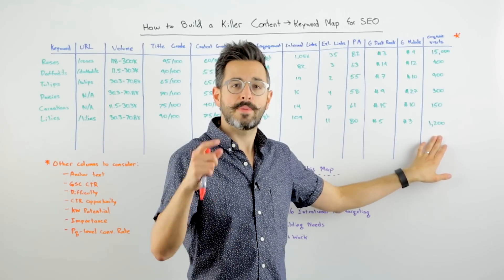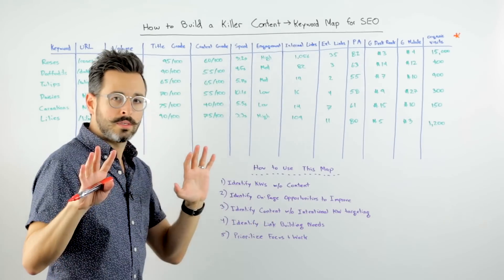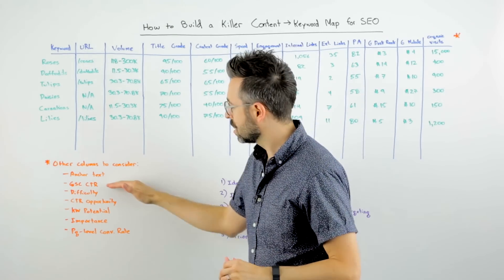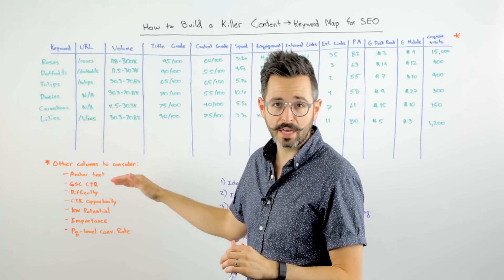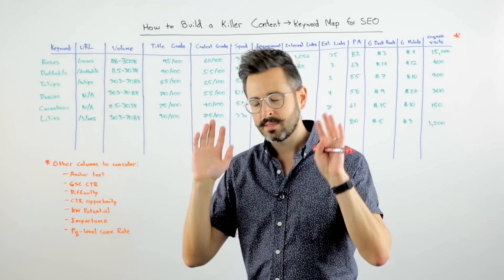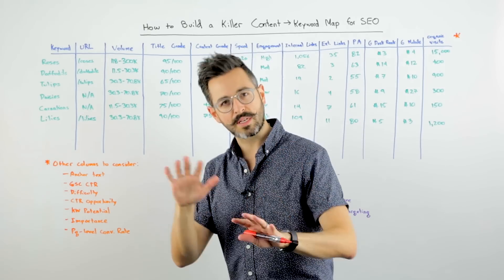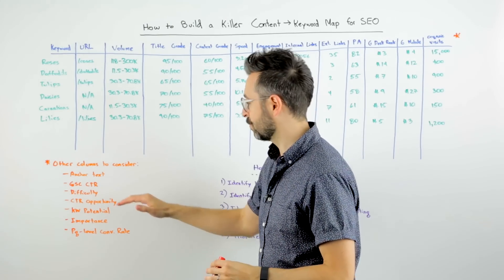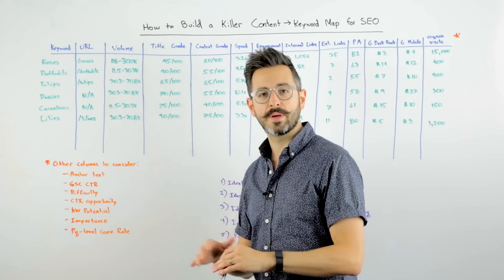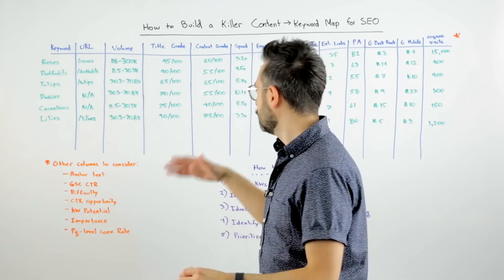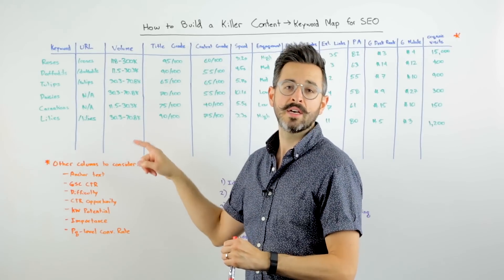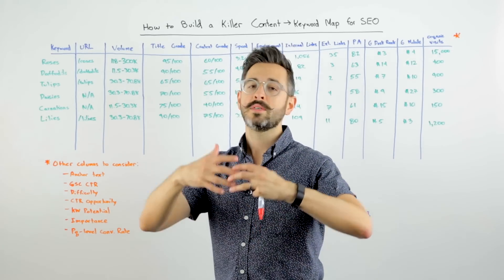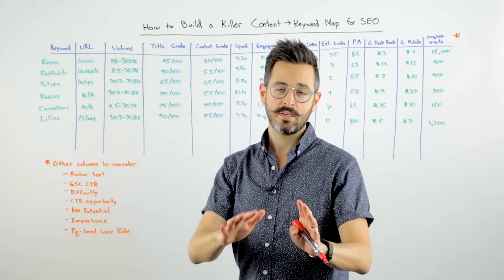You'd also track Google desktop and Google mobile rankings, and the organic visits that page has received from search engines. There are a lot more columns you might consider adding — things like anchor text if you want to analyze your internal and external anchor text. You might look at Google Search Console click-through rates for some of the keywords and add that data in. Google Search Console is not phenomenal data, but it can sometimes be useful. You might have more keyword-driven metrics like keyword difficulty, click-through rate opportunity, importance score, your custom importance score, your potential. And you might even have something like a page-level conversion rate — how much does this contribute to conversions on your site.